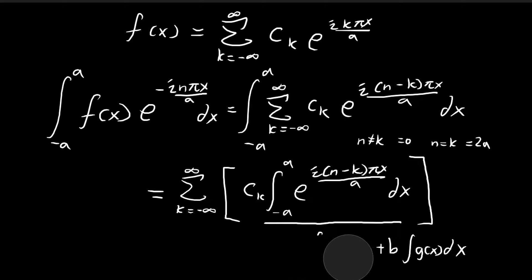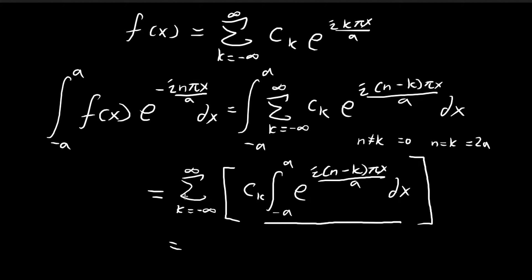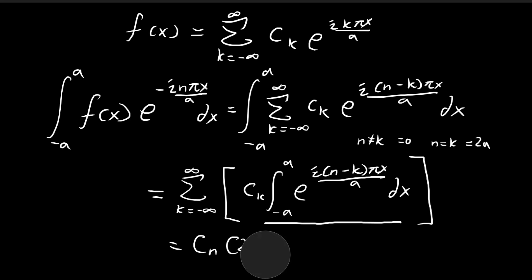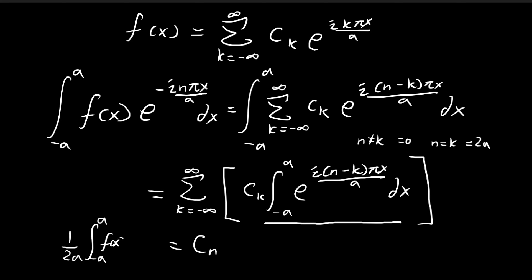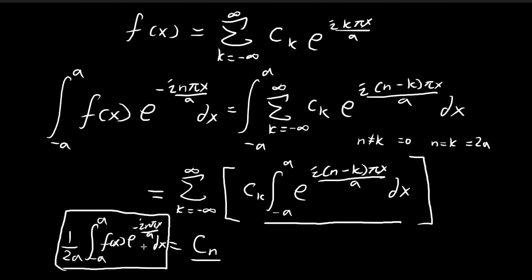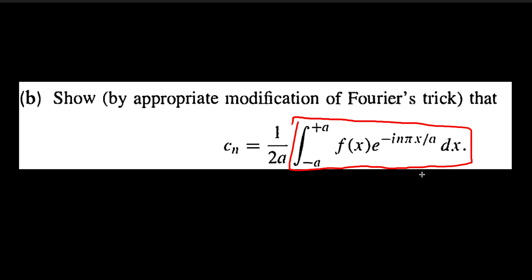This means that in the sum over k from negative infinity to infinity, all terms go to zero except when k equals n — this is essentially Fourier's trick. For the surviving term when k equals n, the integral equals 2a, giving us cn times 2a on the right-hand side. Dividing both sides by 2a, we get cn equals 1 over 2a times the integral on the left-hand side, which exactly corresponds to the integral given by the problem.